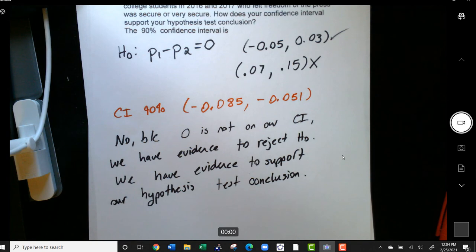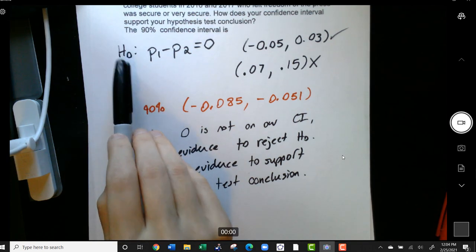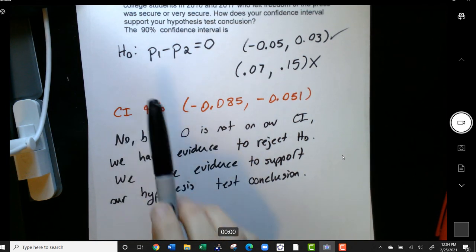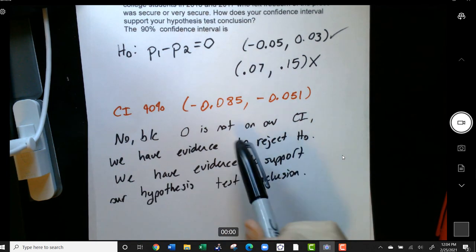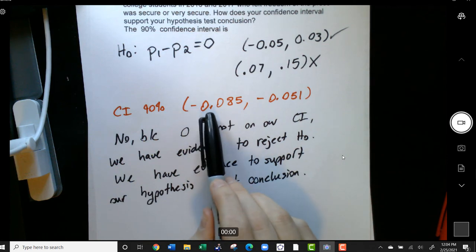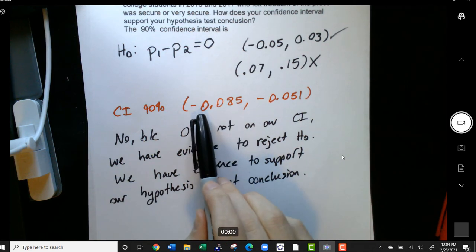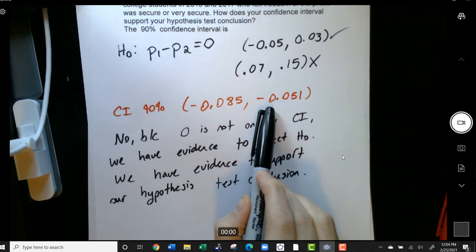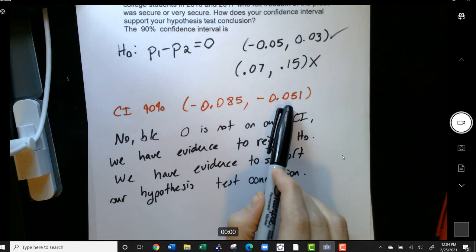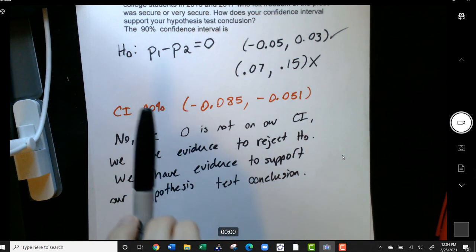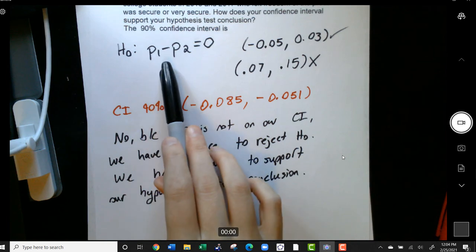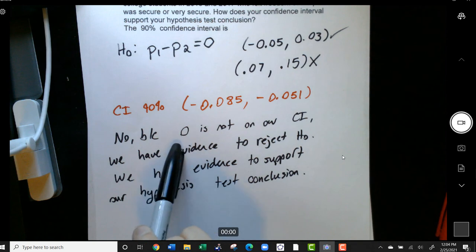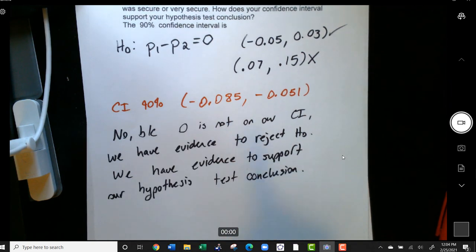So again, just to reiterate, remember our null hypothesis said that the difference between these two is zero. Our confidence interval said the difference between P1 and P2 is probably somewhere between negative 0.085, or negative 8.5%, and negative 0.051, or negative 5%. So the confidence interval says that the difference between these two populations is somewhere between 8% and 5%, not the 0% like our null hypothesis stated.